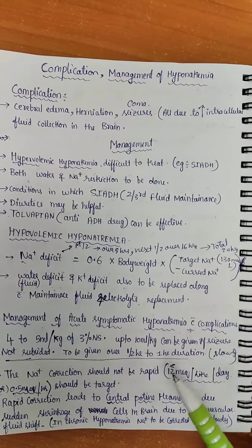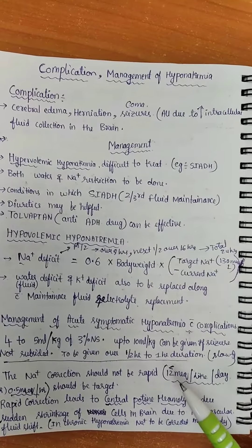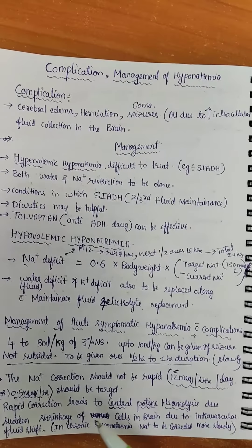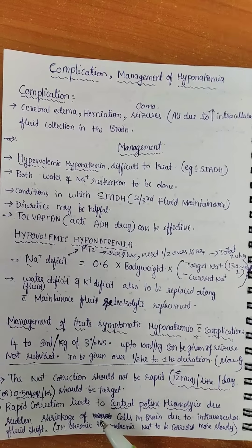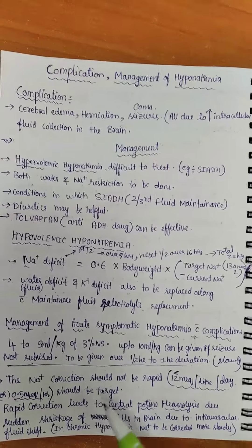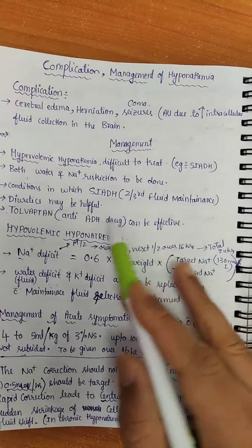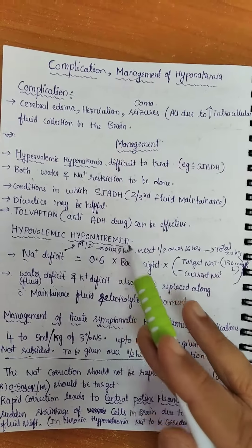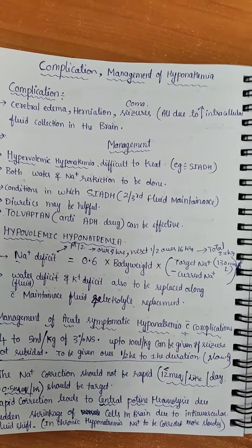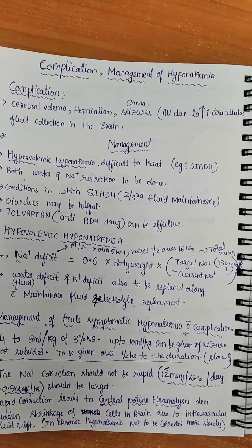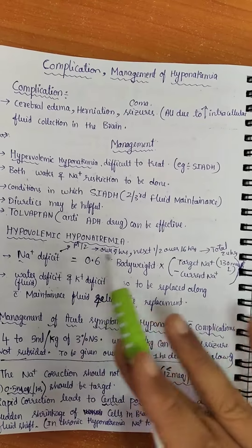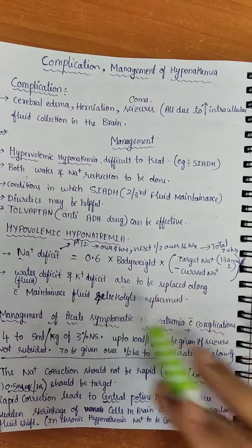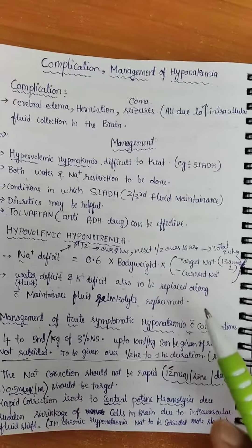Always do not correct sodium levels more than 12 mEq per litre per day or 0.5 mEq per litre per hour. A detailed description of the management of hypovolemic hyponatremia can be seen in the next topic on dehydration, where I will discuss management of hyponatremic dehydration. Here I have given a brief idea. Thank you for watching the video.